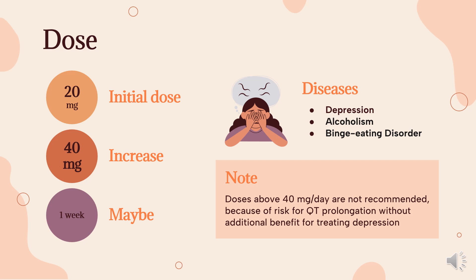Premenstrual dysphoric disorder (off-label): 5 mg PO on the estimated day of ovulation; increase dose by 5 mg each day thereafter to a maximum of 10 mg. Continue until menstruation begins. Decrease dose to 20 mg on the first day of menstruation, then to 10 mg the next day. Stop treatment from day 3 until ovulation begins again.